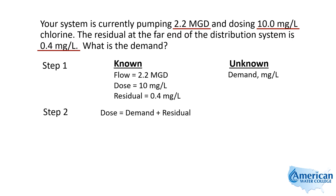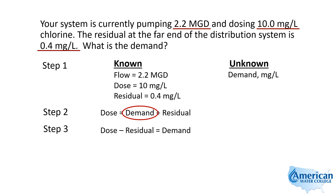The dose formula says that dose equals the demand plus the residual. We're looking for the demand, so we have to rearrange this. If we subtract the residual from both sides, that'll eliminate it from the right side and give us dose minus residual on the left side. So: demand equals dose minus residual.